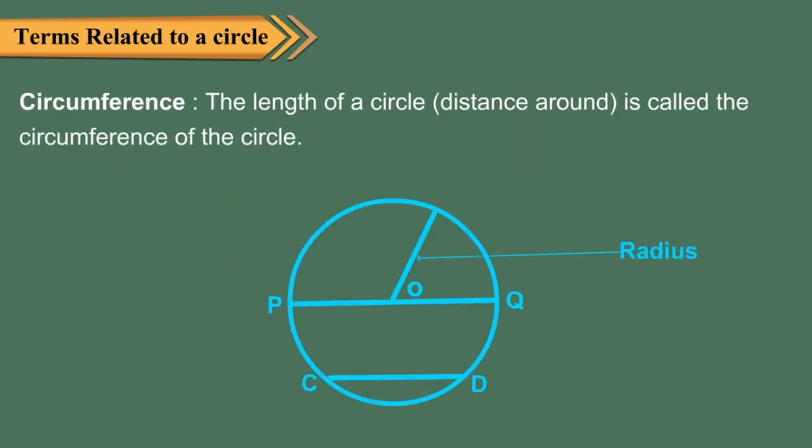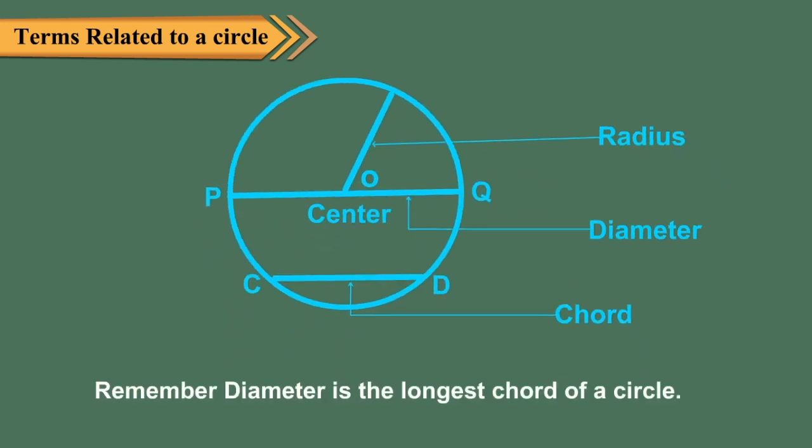Circumference: the length of a circle, i.e., the distance around it, is called the circumference of the circle. Remember: diameter is the longest chord of a circle.